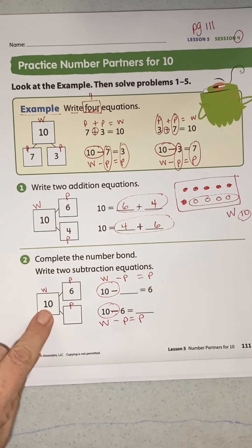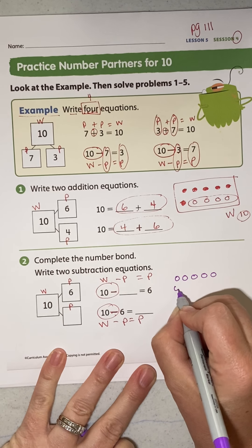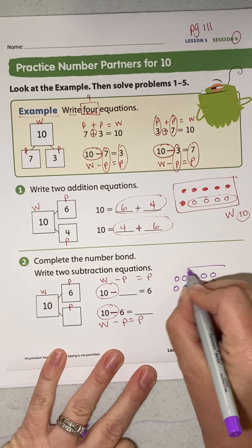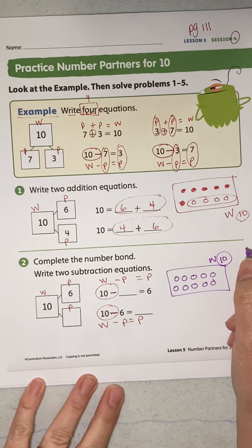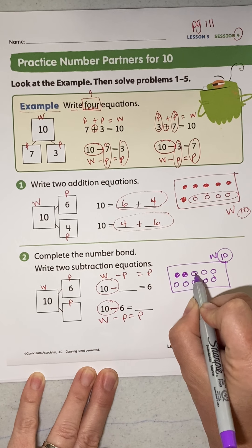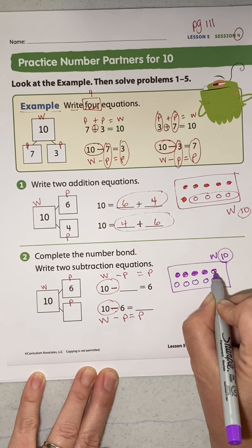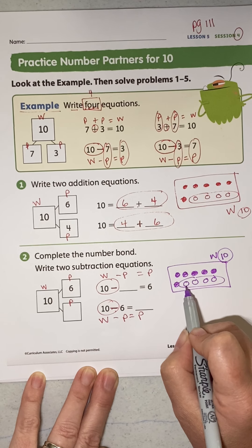Okay, so if I have 10 as my whole. 1, 2, 3, 4, 5, new line, 6, 7, 8, 9, 10. That's my greatest number. That's my whole. If 6 is my part, 1, 2, 3, 4, 5, 6. What's the part that's missing?